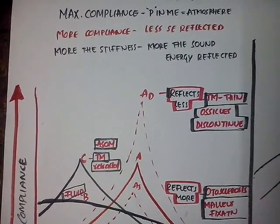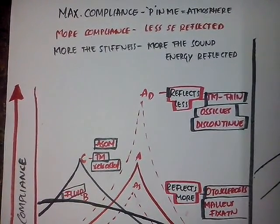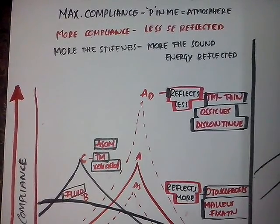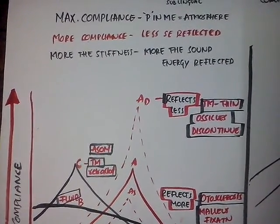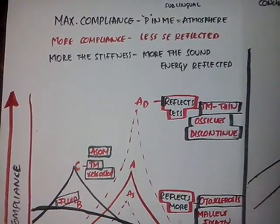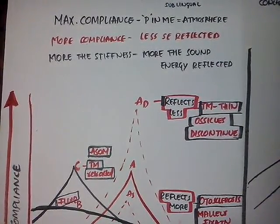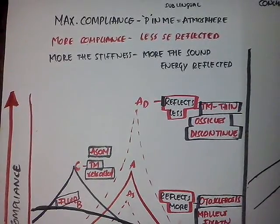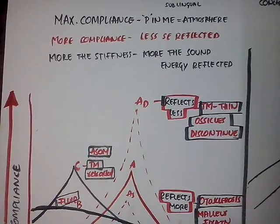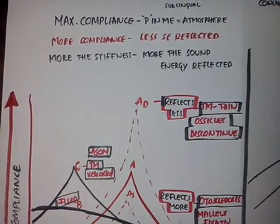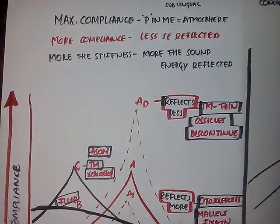When a sound strikes the tympanic membrane, some sound is absorbed while the rest is reflected. This indicates the maximum compliance of the tympanic membrane in a normal person when the pressure in the middle ear is equal to that of atmospheric pressure. Compliance is inversely proportional to the sound energy reflected — more the compliance, less the sound energy reflected.